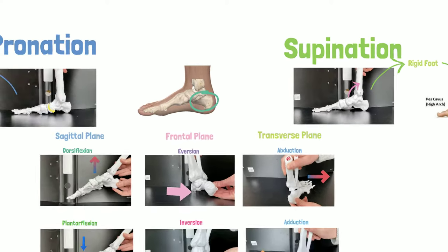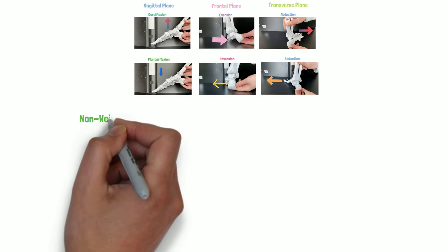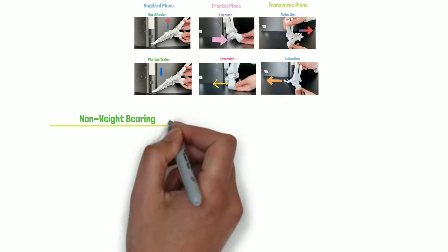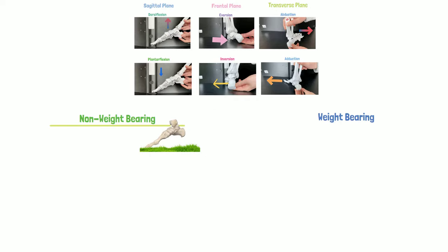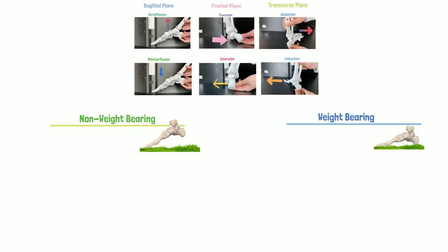There are two possible ways to achieve pronation and supination. First is non-weight bearing when the joint is off the ground, and second is weight bearing when the joint is stabilized by the ground.